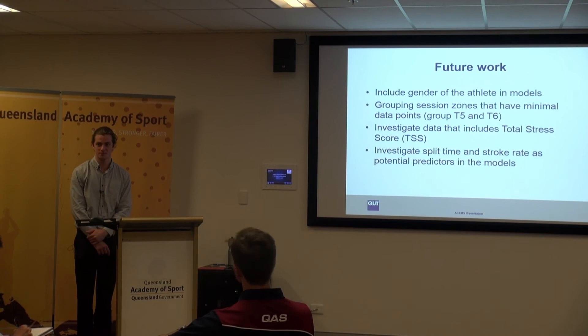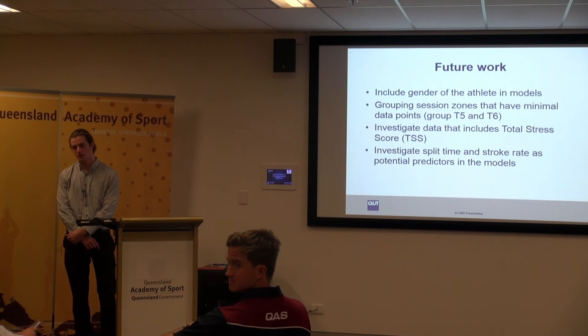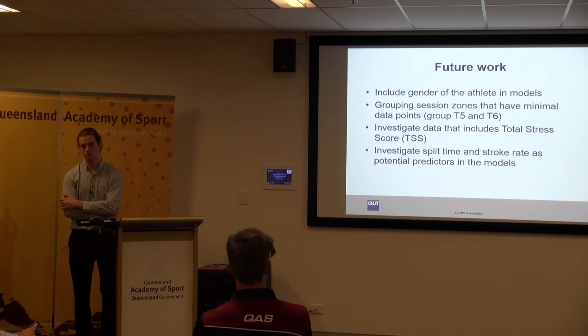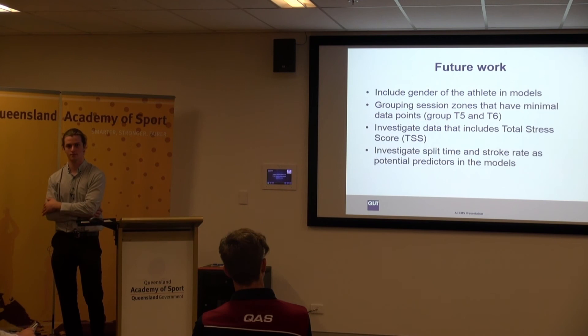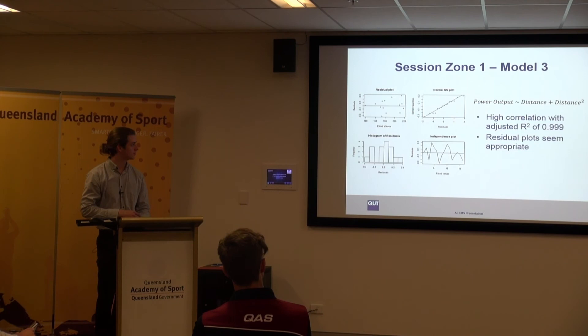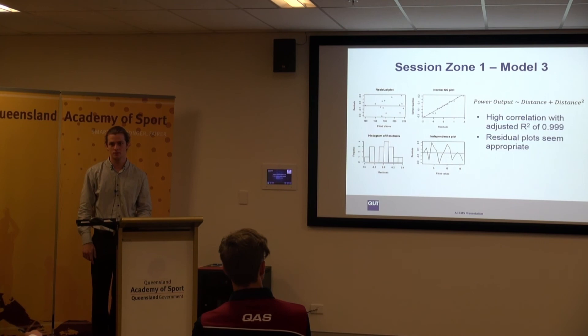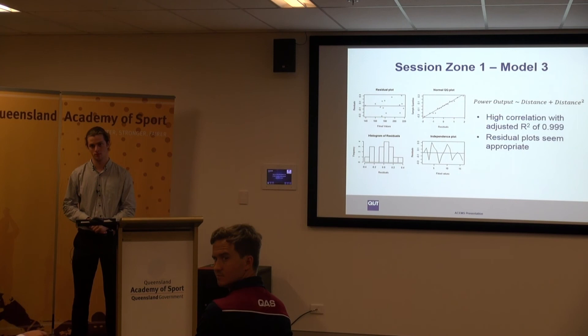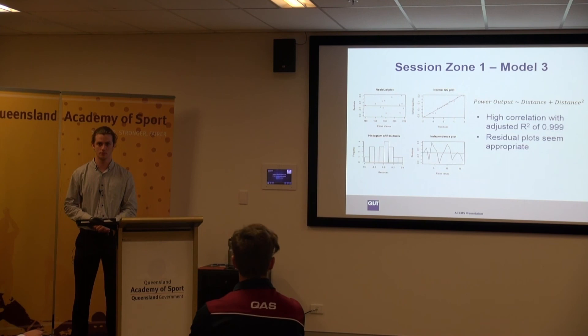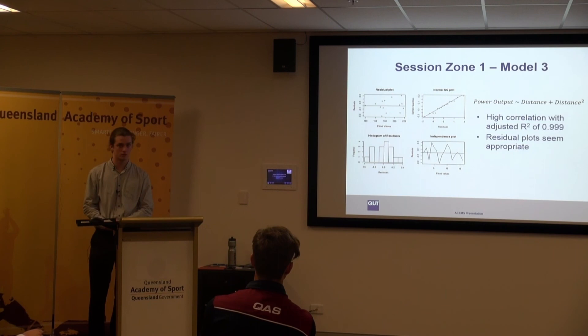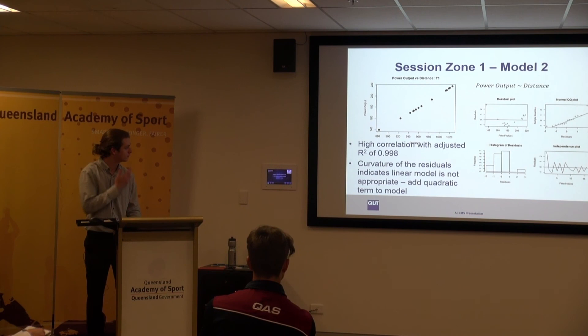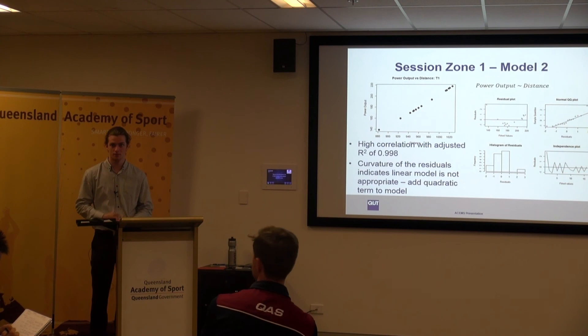It was suggested that the physiological demands at T5 — where athletes need recovery — may explain why that session zone required a different model. For T1, the data points come exclusively from a step test conducted approximately twice a year, where athletes start at extremely low intensity to measure the oxygen cost of exercise. Because athletes never actually train at T1 intensity outside of that specific test, the data has a very distinct character, which explains its unusual linear-with-distance relationship.